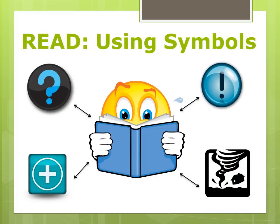Marking a text allows the reader to stay engaged. A reader can create their own marking system using symbols. For example, I use several symbols when I read. I use a question mark to denote questions, and I use an exclamation point for things which interest or excite me.